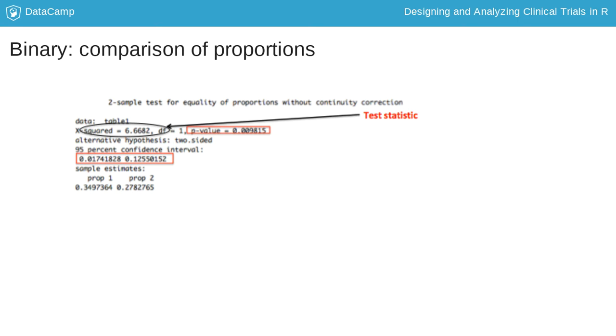Here the p-value is significant at the 5% level, and the 95% confidence interval for the difference in proportions excludes 0, providing evidence against the null hypothesis.